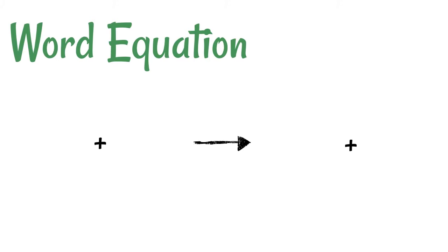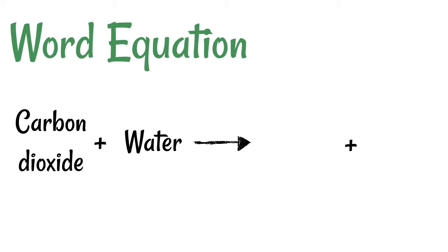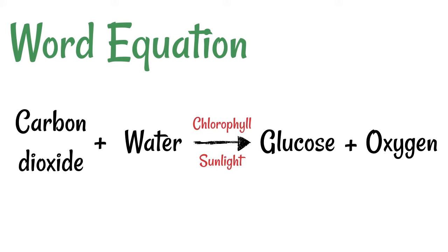The word equation is pretty simple. Just plug in those chemicals that we've already mentioned: carbon dioxide and water goes to glucose plus oxygen. Sometimes we might add on some of the extra details like sunlight is used and also chlorophyll. Chlorophyll is just a pigment that's responsible for the absorption of the light and it's present inside of chloroplasts.